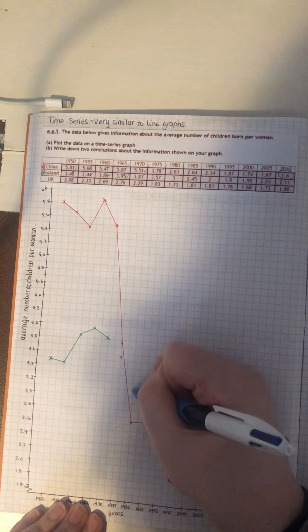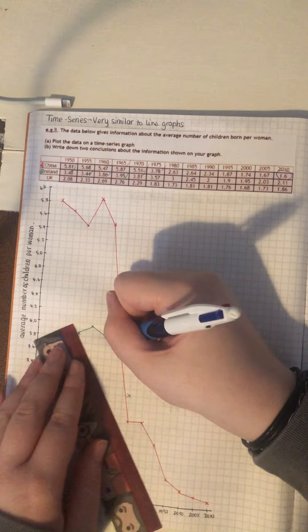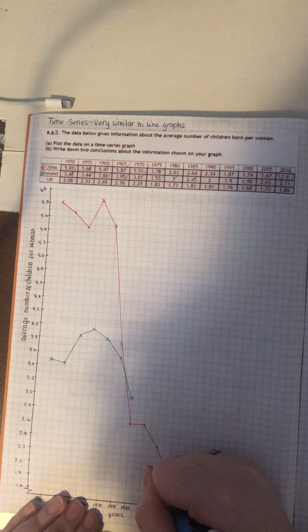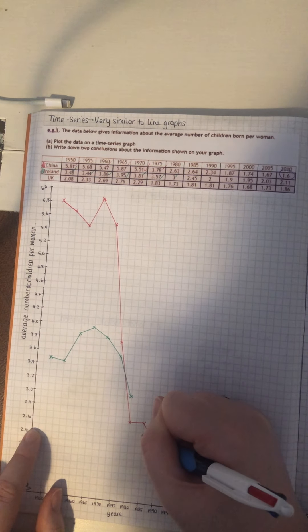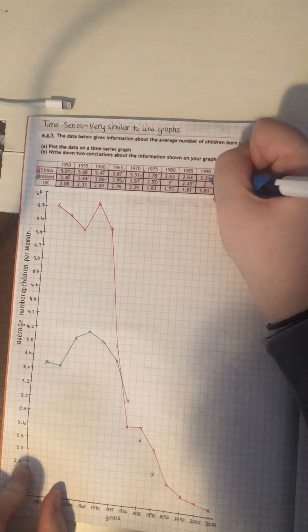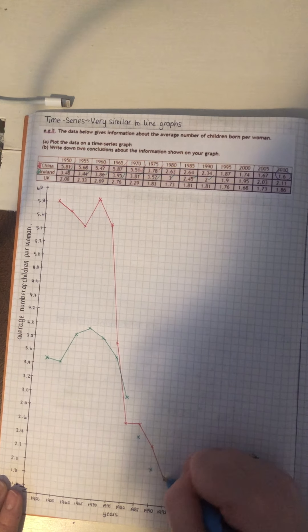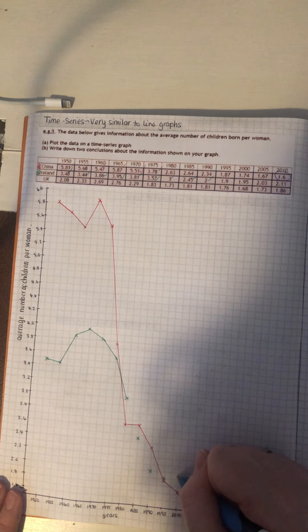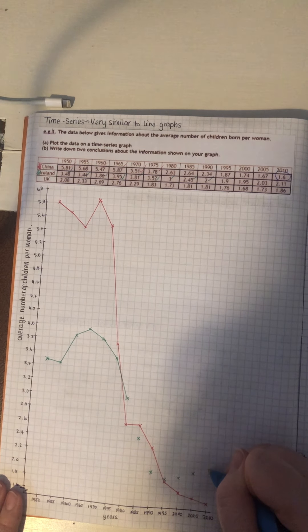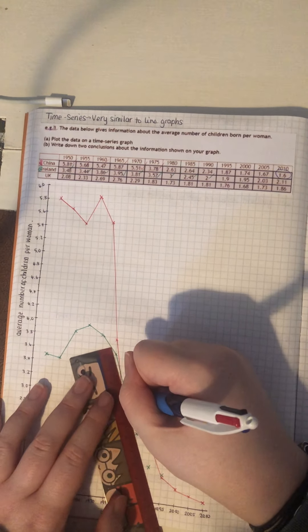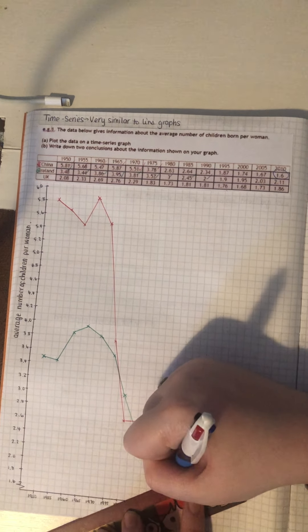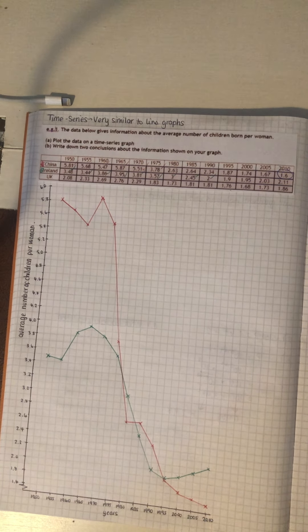And then it drops a bit. 1980 is just 3. And then it drops quite a lot again. 1985 is 2.45. So, it's going to be there. Then it drops to 2 in 1990. And then 1.9 in 1995. And then 2000 is 1.95, so it's actually starting to rise again. And then 2005 is 2.03. And then 2010 is 2.11. So, that's Ireland done.